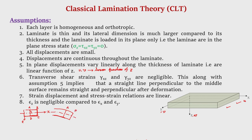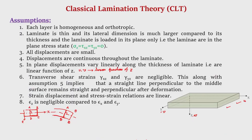After deformation, points a, b, c, d move to a', b', c', d'. Going by our assumptions, the line AD remains straight and perpendicular to the mid-surface — this is a pure rotation with no shear strain. If there were shear strain in the x-z plane, the rectangle ABCD would not remain a rectangle; points a and b would move to a' and b', and the angle would represent shear strain γxz. Because γxz = 0, the transverse strain is negligibly small, and the line AD which was straight and perpendicular to the mid-surface remains so after deformation.